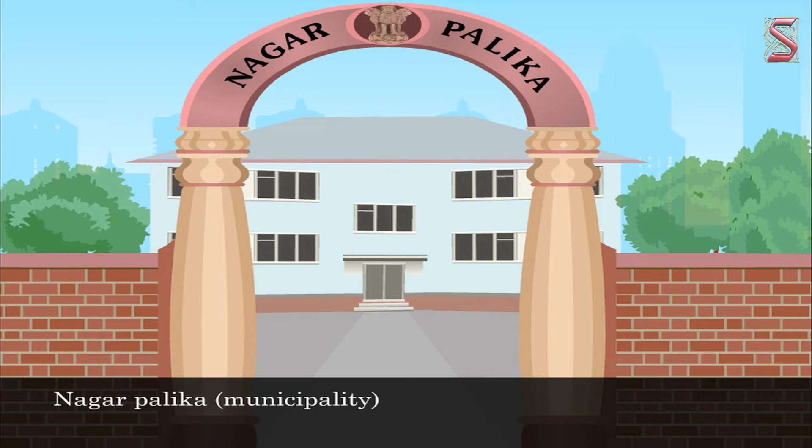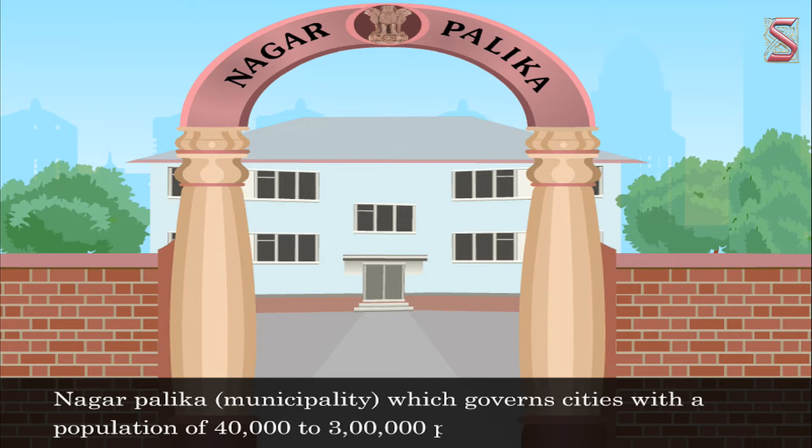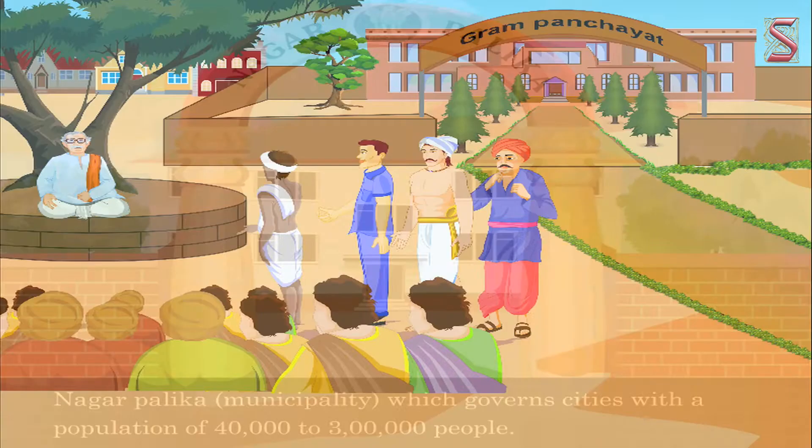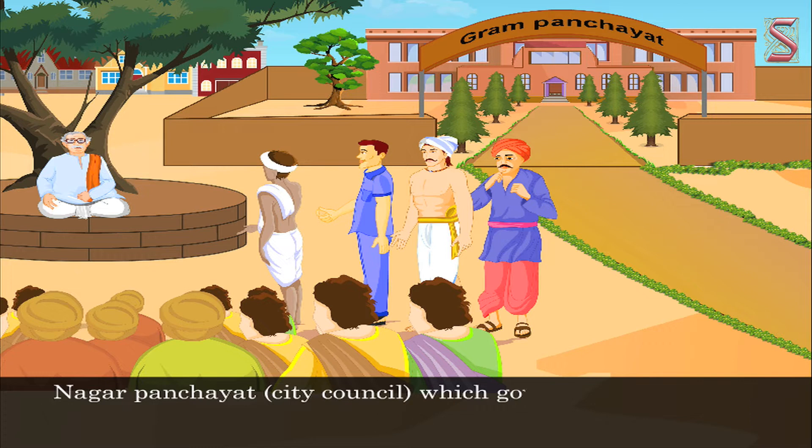Second, Nagarpalika or Municipality, which governs cities with a population of 40,000 to 300,000 people. Third, Nagar Panchayat or City Council, which governs small cities with populations of 20,000 to 40,000.